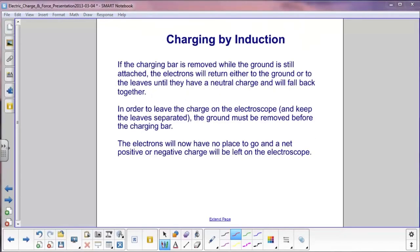If the charging bar is removed while the ground is still attached, the electrons will still have a path to ground. So, they can either go down to the ground or come up from the ground. In either case, the electroscope will now be neutral again. The leaves will fall back together with each other.